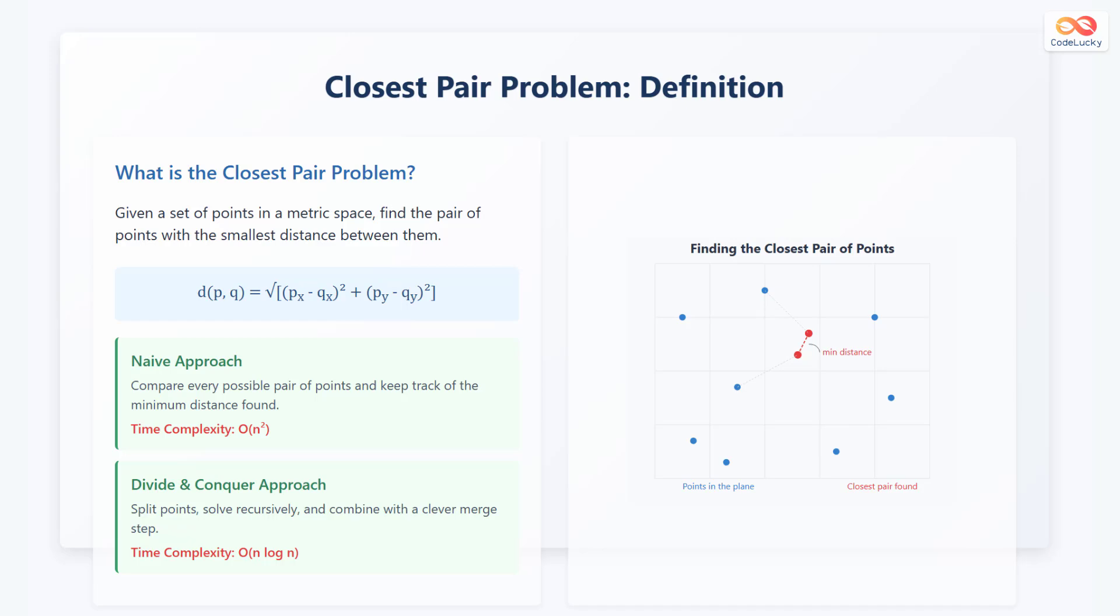A naive approach to solving this problem is to compare every possible pair of points and keep track of the minimum distance found. This method has a time complexity of O(N²). A divide and conquer approach splits the points, solves recursively, and combines with a clever merge step, and this has a time complexity of O(N log N).